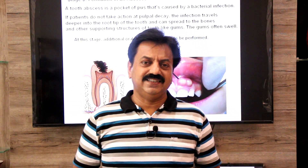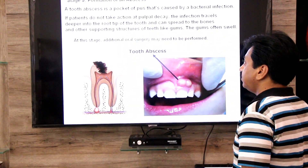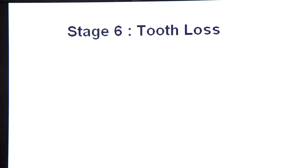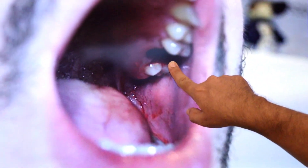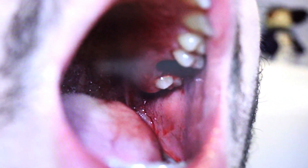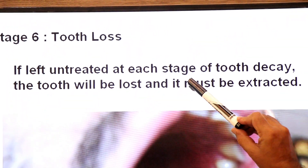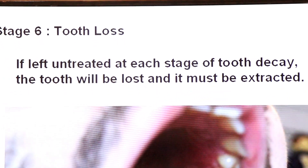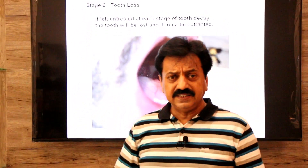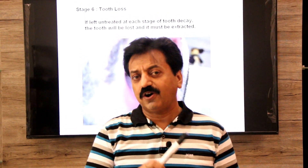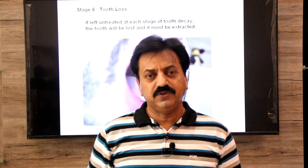This is the final stage: tooth loss. If left untreated at each stage of tooth decay, the tooth will be lost and it must be extracted. So dear students, these were the six stages of tooth decay. Tomorrow I will be with you to discuss another common dental disease — periodontal disease. Thank you, dear students. Wish you all the best.